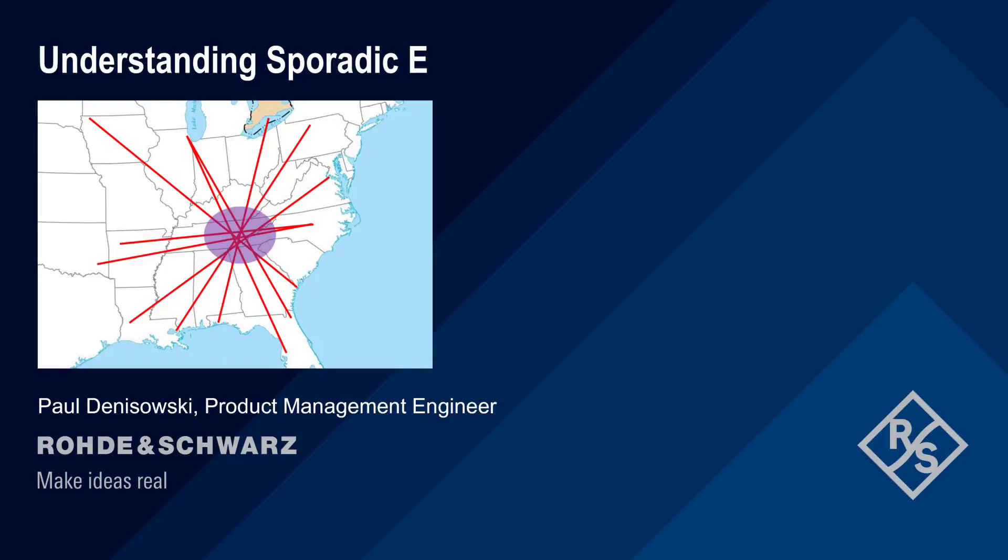Hello, and welcome to this presentation, Understanding Sporadic E. In this short presentation, we'll provide an overview of sporadic E, an uncommon type of ionospheric propagation that primarily affects signals at VHF frequencies.